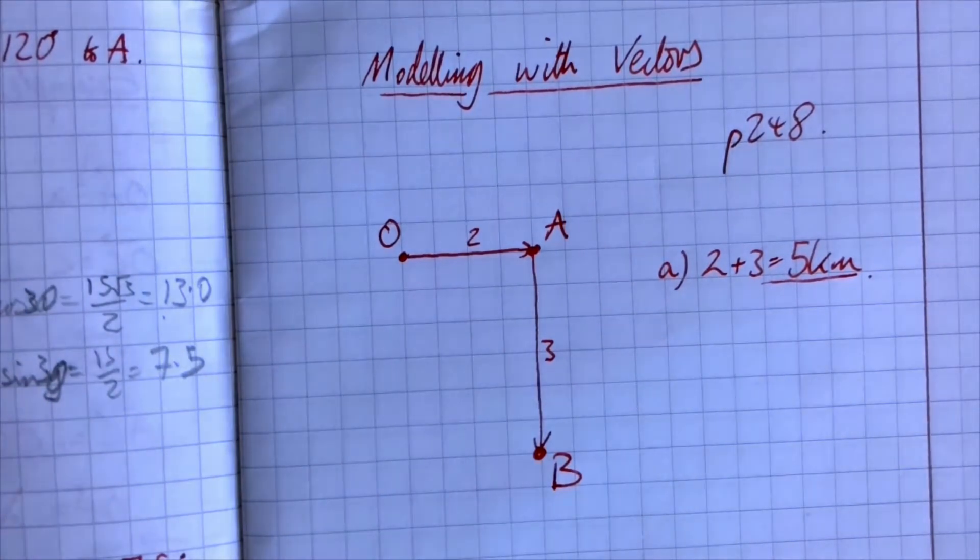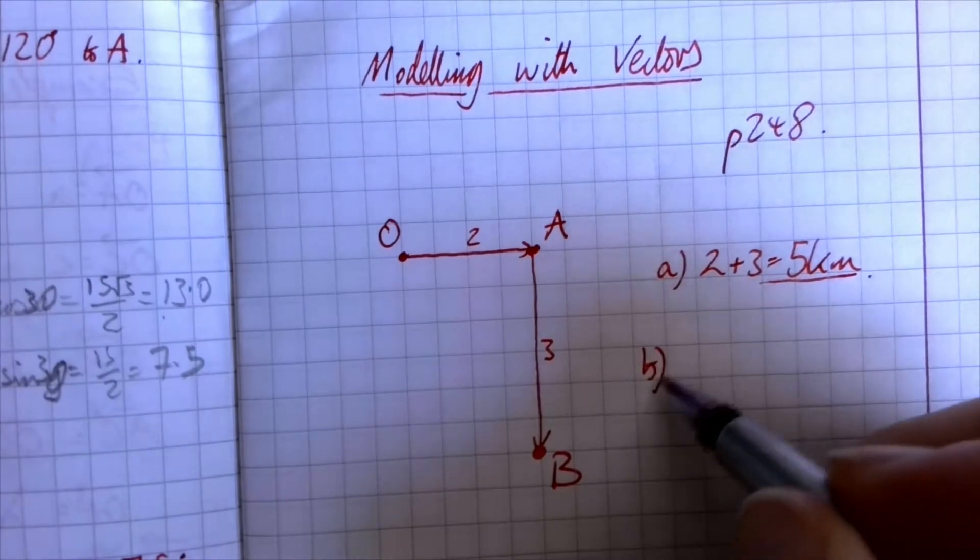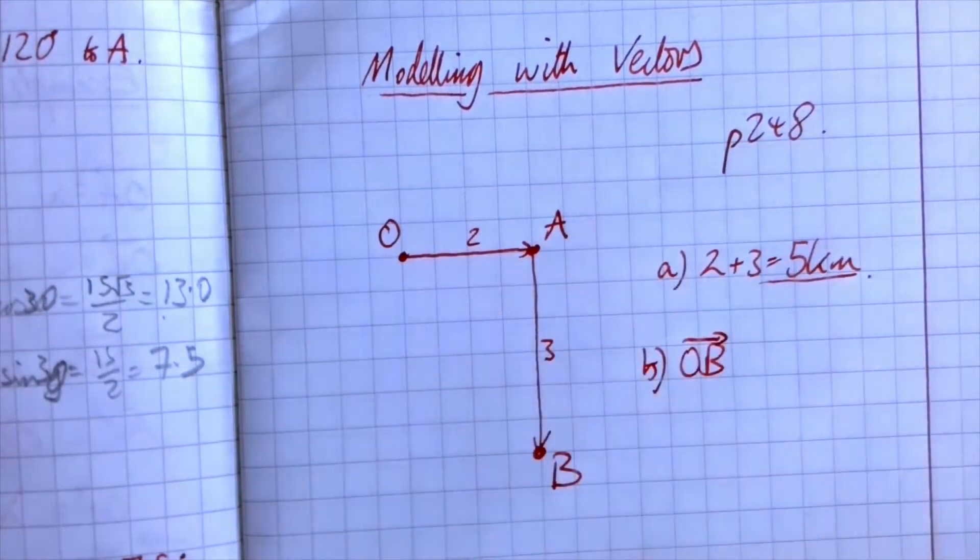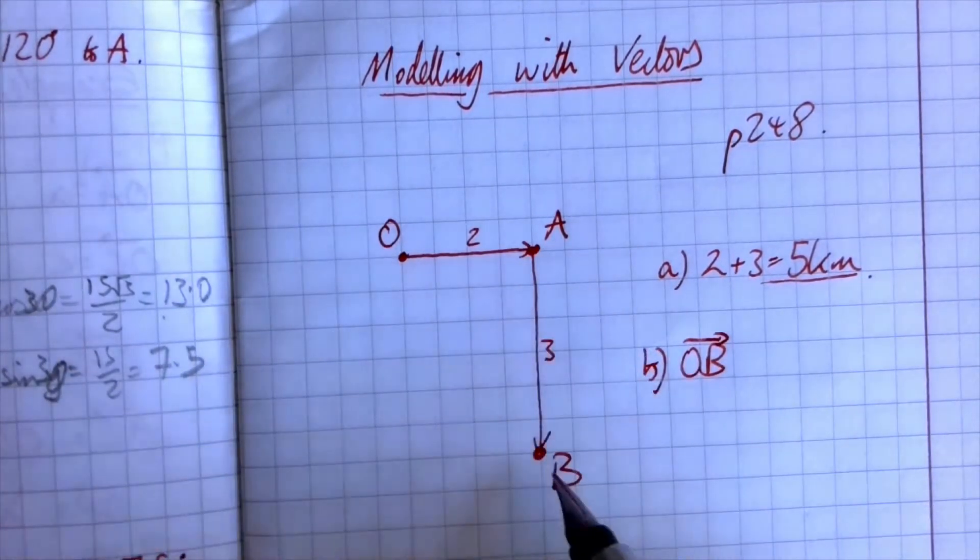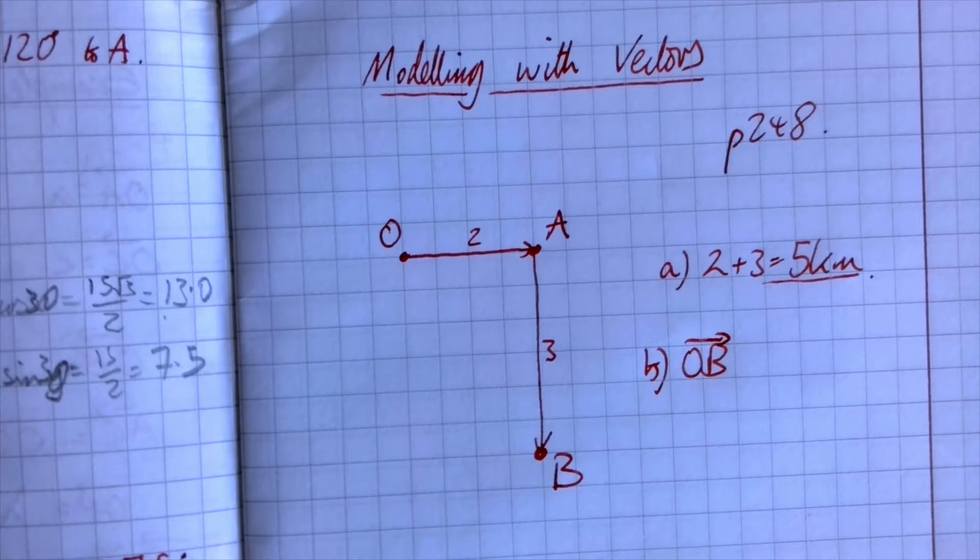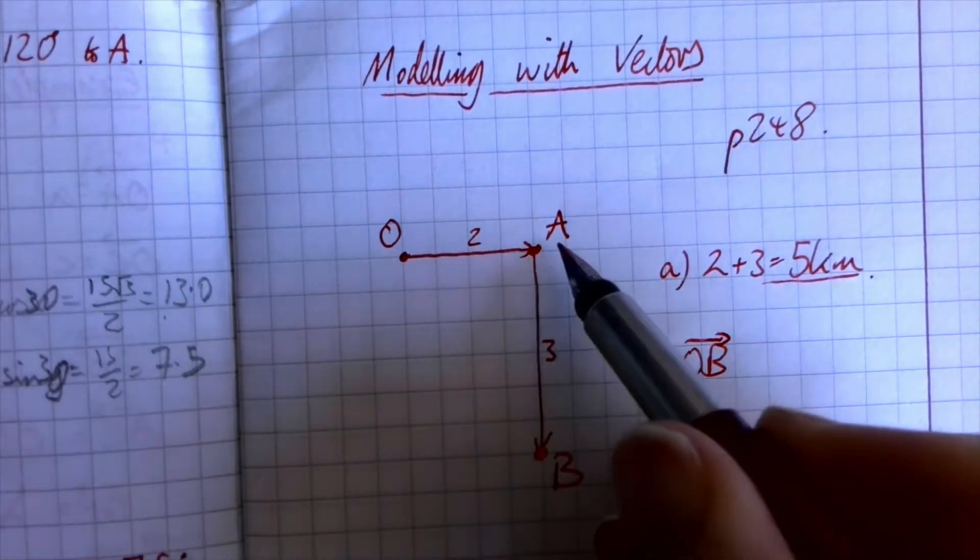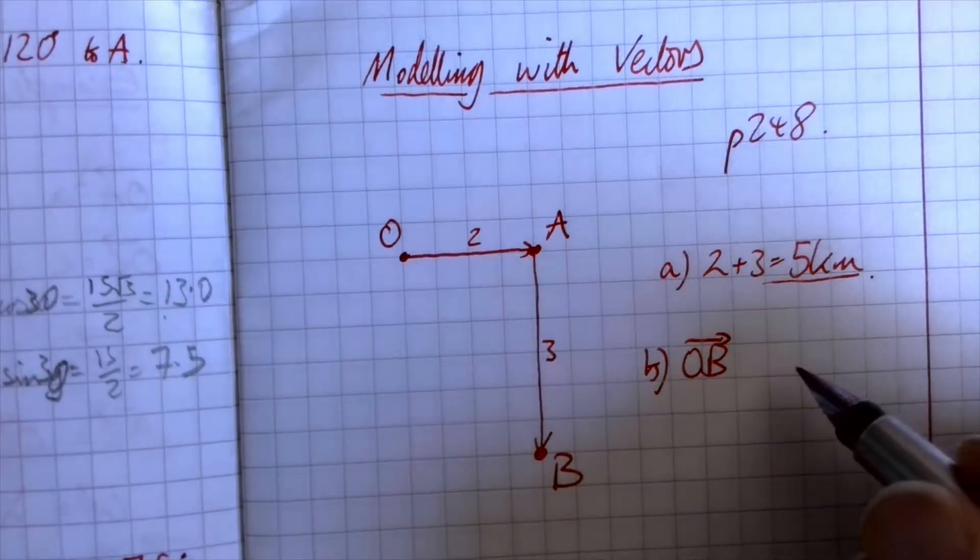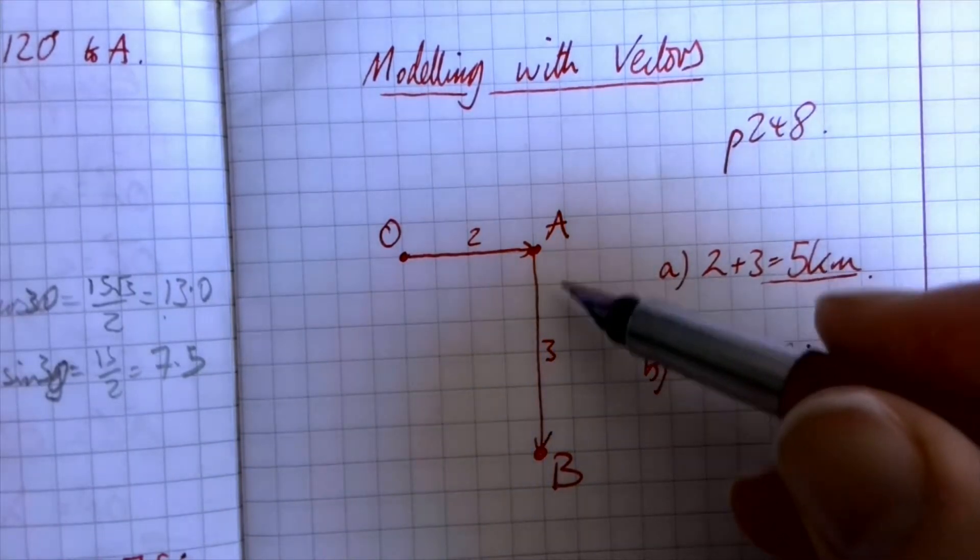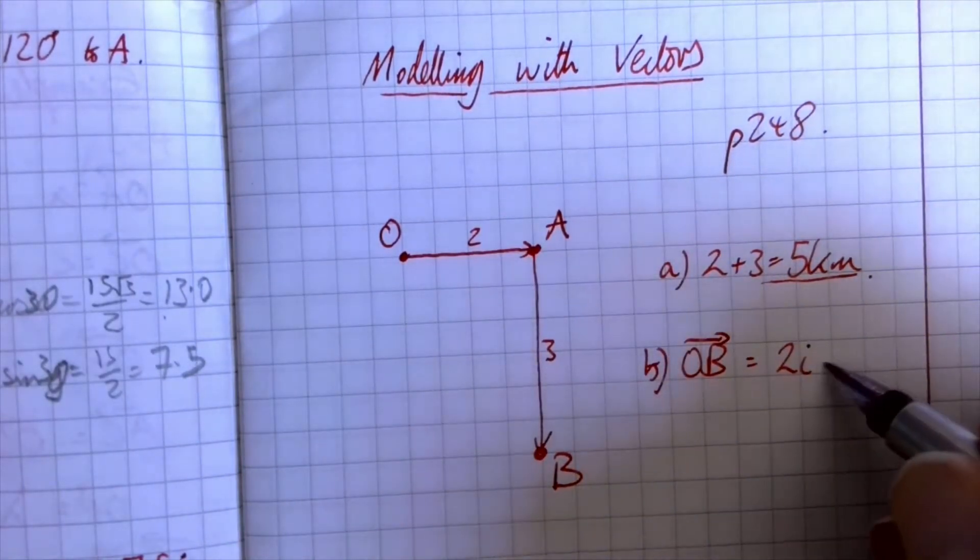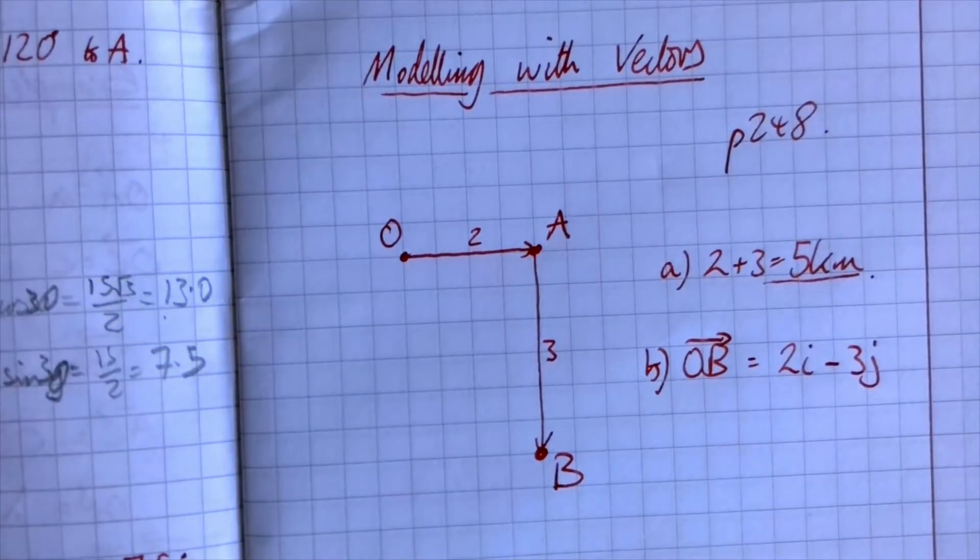The position vector of B relative to O. So to do that we want to say what you would do to get from there to there. Well, going east is going to the right along the x-axis which is positive i. So that'll be 2i. And then going south is going down, so that'll be -3j. And that's part B done. So nice, simpler start today.